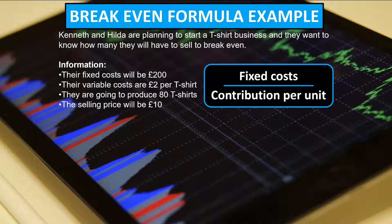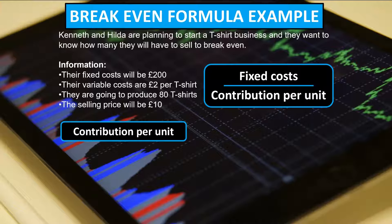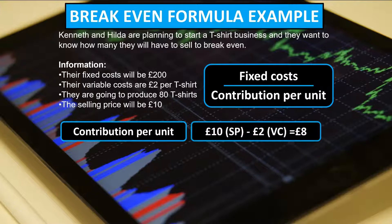Here's the scenario: Kenneth and Hilda are planning to start a t-shirt business and they want to know how many they will have to sell to breakeven. They have fixed costs of £200, variable costs of £2 per t-shirt, they are going to produce 80 t-shirts, and the selling price will be £10. First, we calculate the contribution per unit: £10 selling price minus £2 variable cost gives a contribution per unit of £8 per t-shirt.